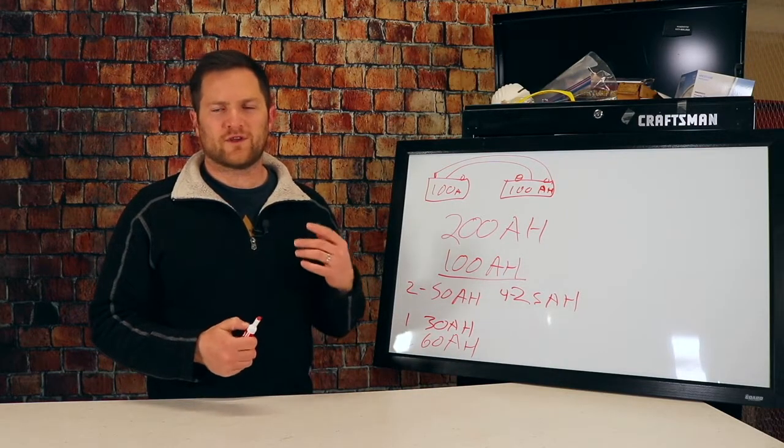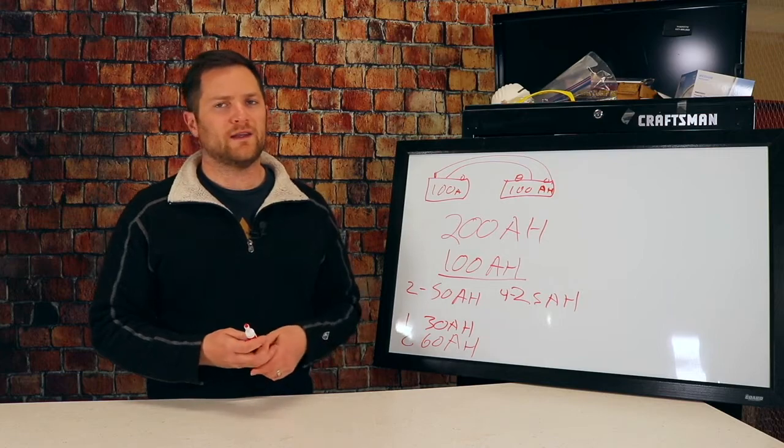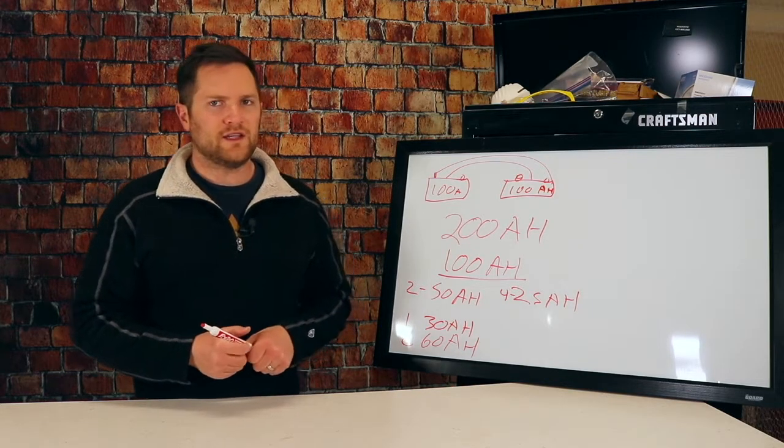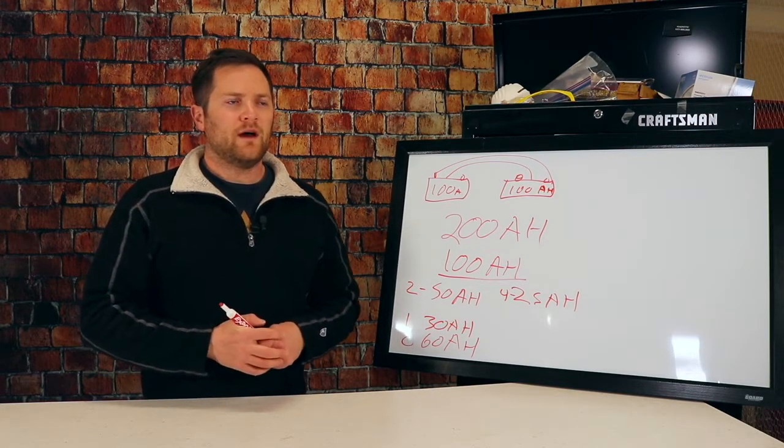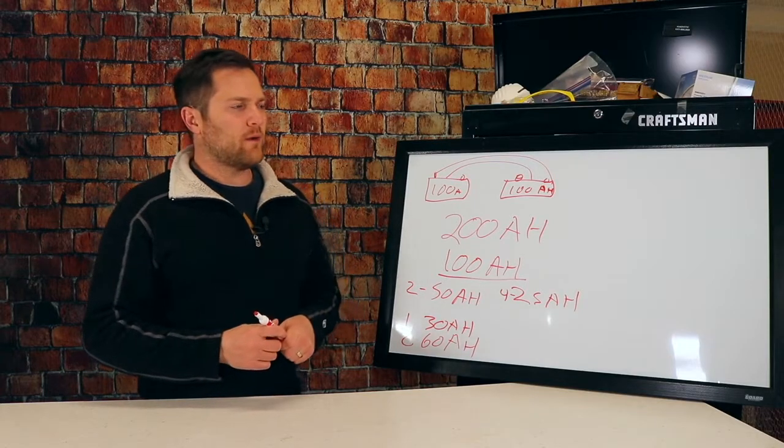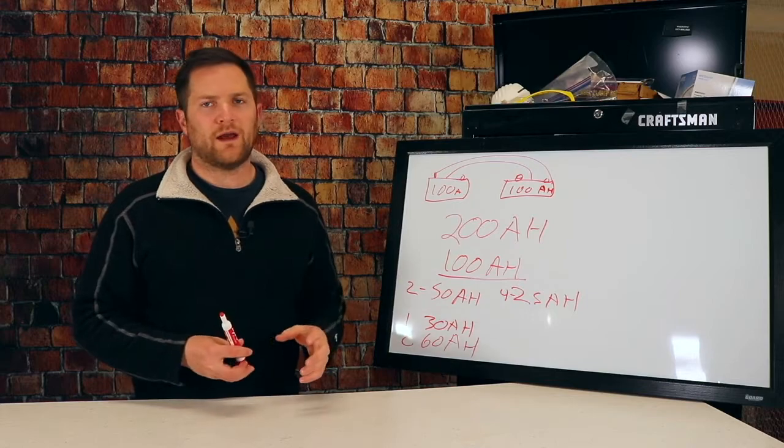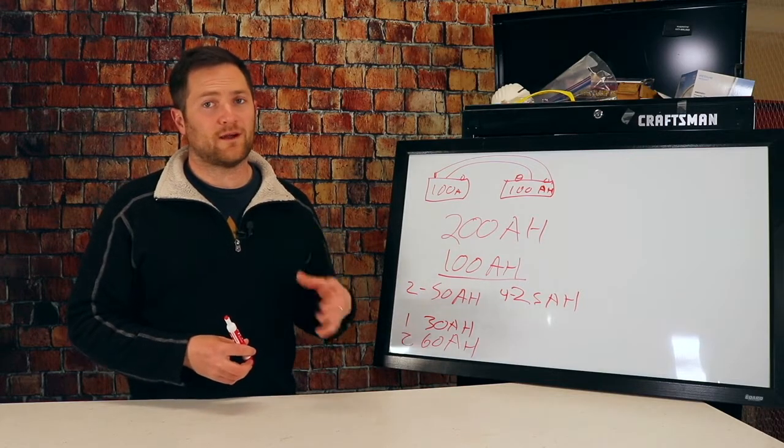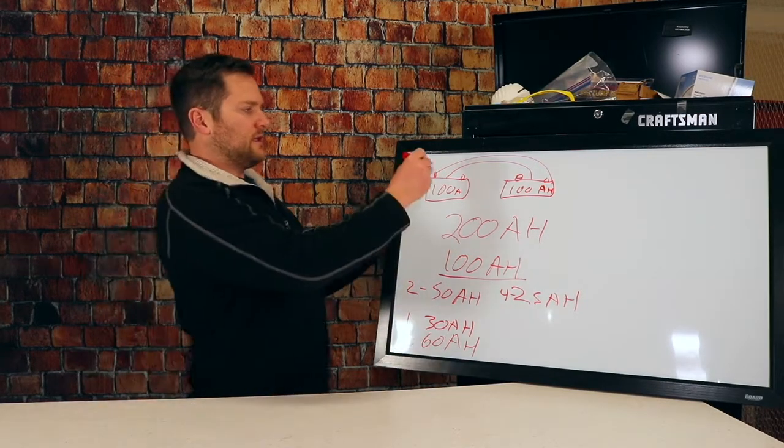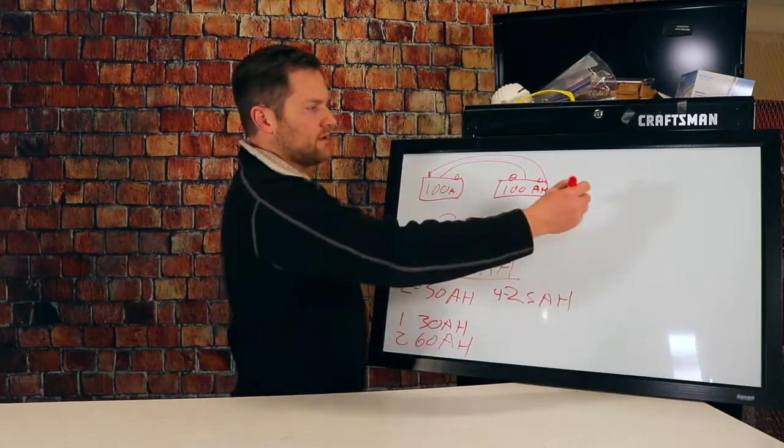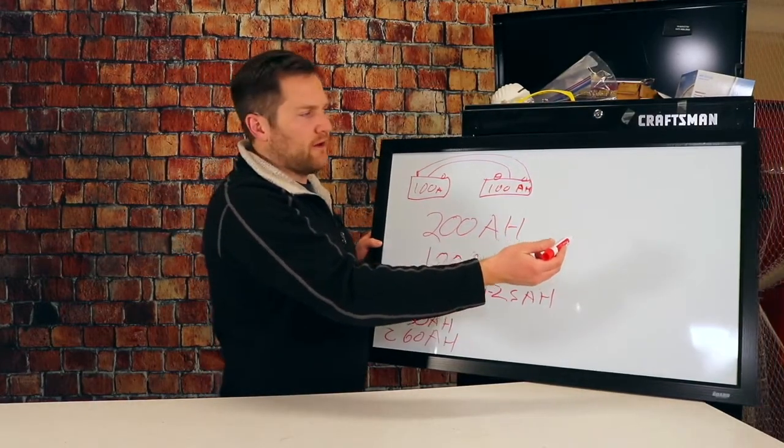But it was nice not to have to run the generator every single day because typically when we camp early season and we have the heater going and we have all of our stuff going and we're charging our phones and iPads, we're running the generator every day to keep up. With the solar, we ran it probably every two to three days just to make sure that we didn't run out of power in the middle of the night. And then we were stuck without heat. Let's look at, so this is a lead acid scenario. So let's look at if we have a lithium battery scenario.